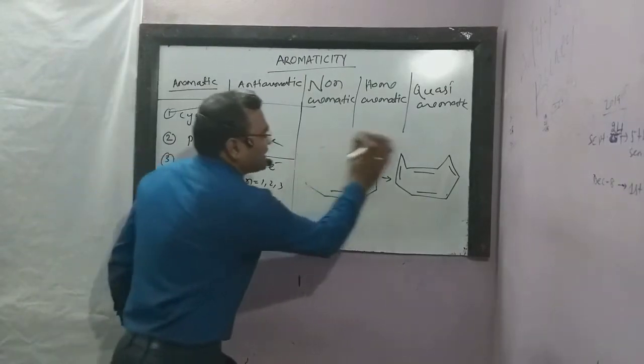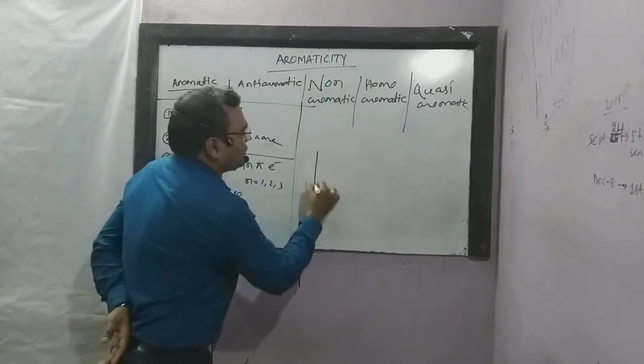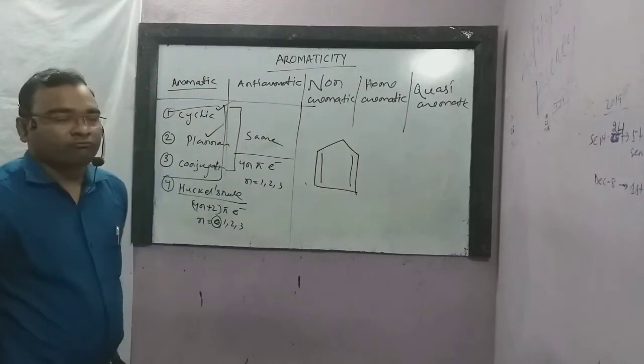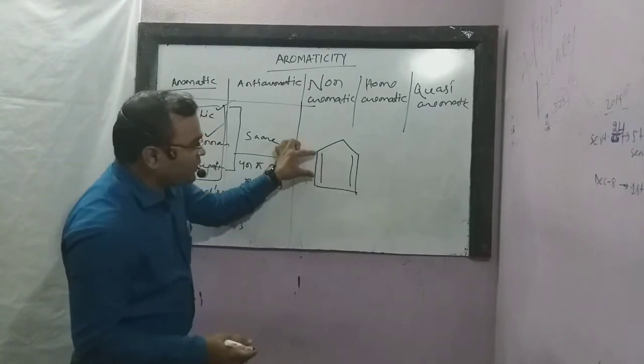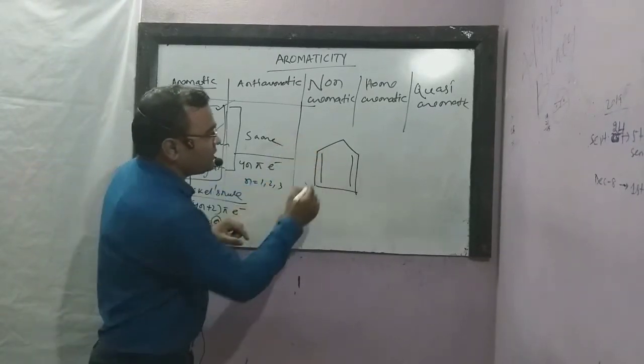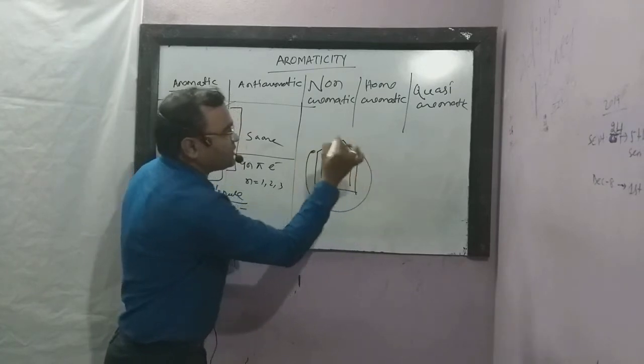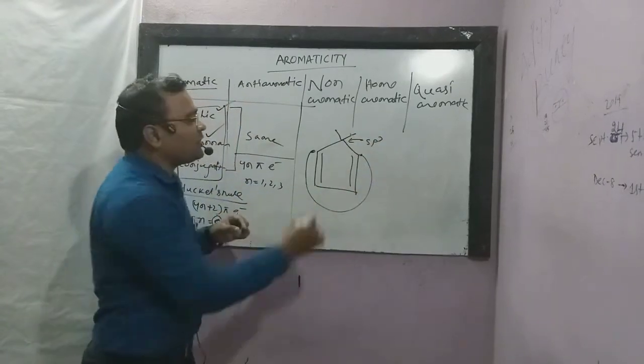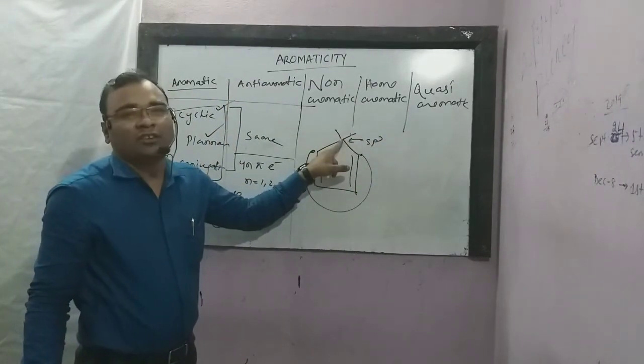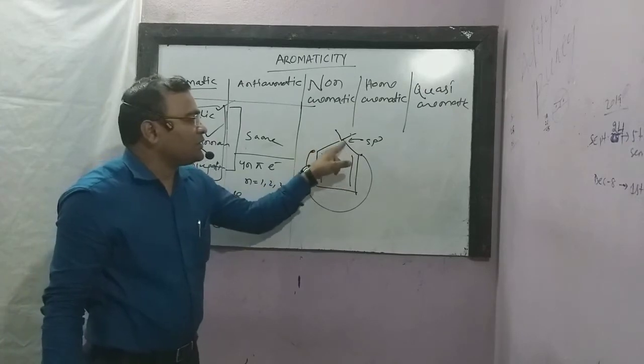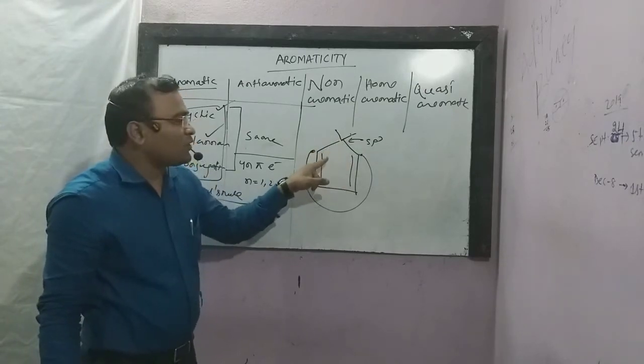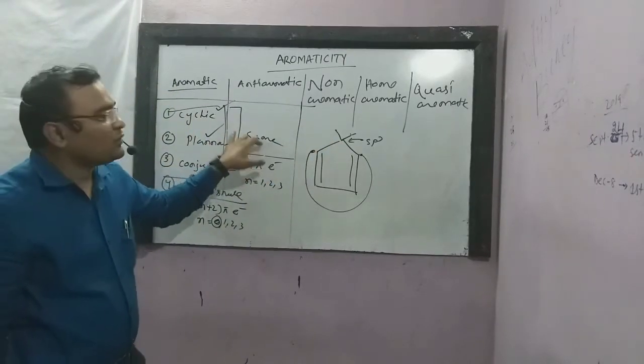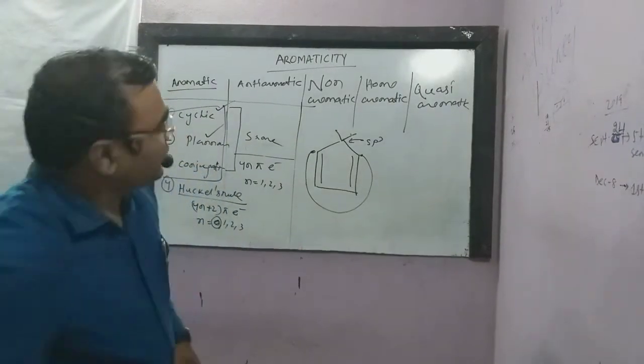Let's take another example: cyclopentadiene. Be careful - it has double, single, double bonds. But here, an sp3 carbon is present. This breaks the planarity because sp3 carbon is present. If you don't have planarity, you don't have conjugation. That means it's not aromatic, so it's non-aromatic compound.